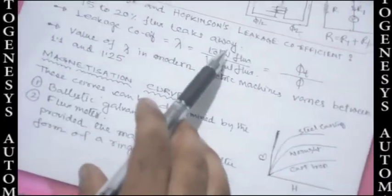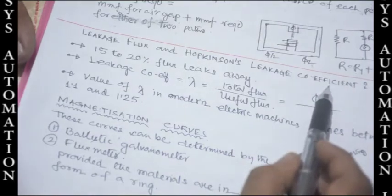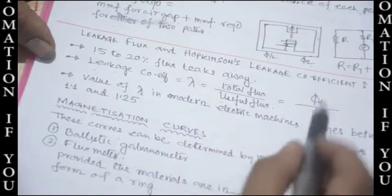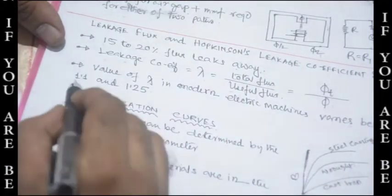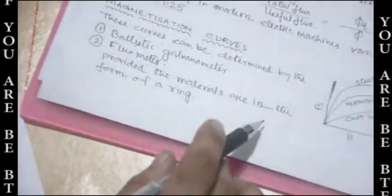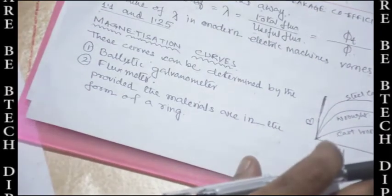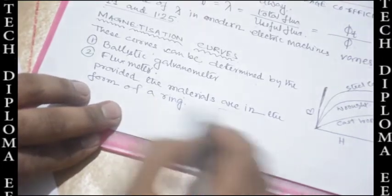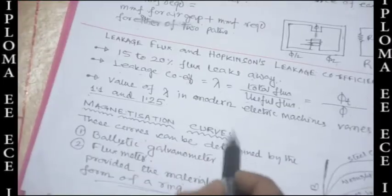Leakage flux is also described by Hopkinson's leakage coefficient. About 15 to 20 percent of flux leaks away. The leakage coefficient lambda = total flux / useful flux = φ_t / φ. The value of lambda in modern electrical machines varies between 1.1 to 1.25. Magnetization curves can be determined using a ballistic galvanometer or flux meter, provided the materials are in the form of a ring.